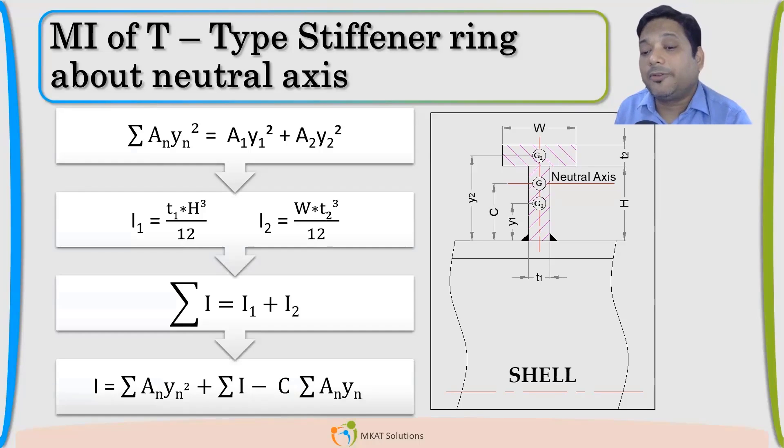Now, the combined moment of inertia, this is the formula. Summation of A1 or AN YN square plus summation of the individual moment of inertia minus C centroid multiplied with the summation of AN YN. This is the formula to find the combined moment of inertia of any typical cross section.